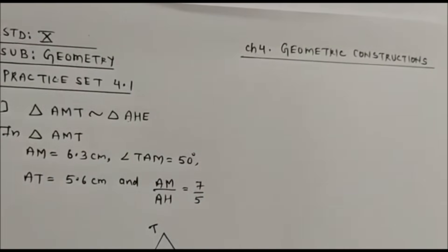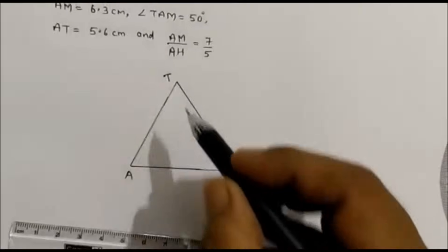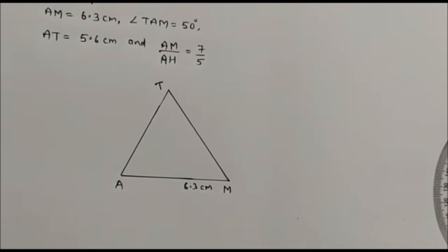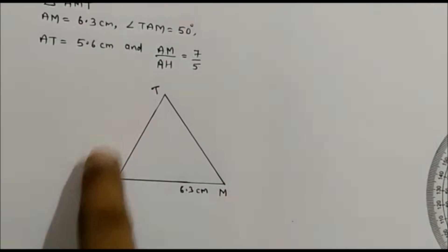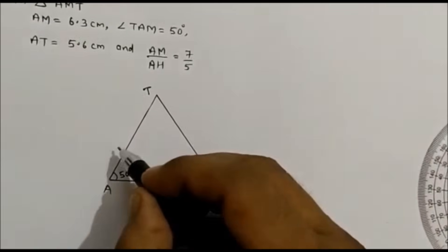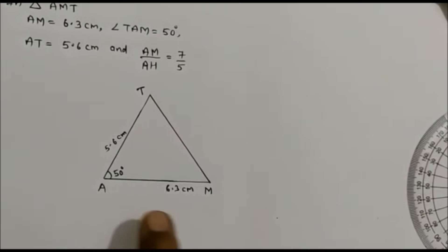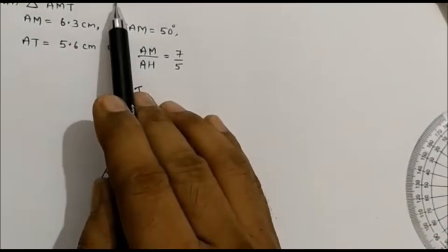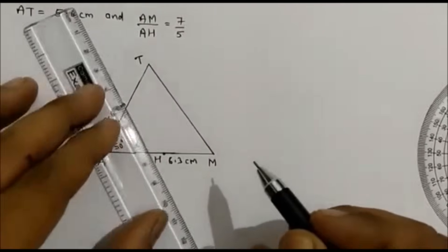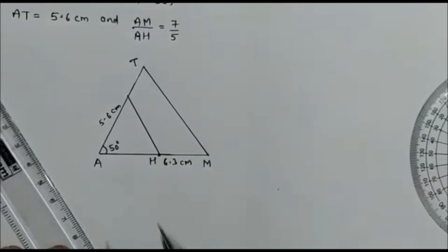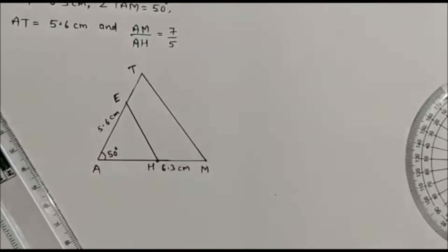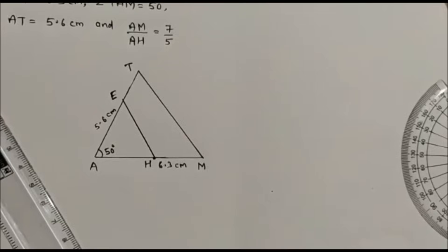We will draw the rough figure. First we draw triangle AMT — AM is 6.3 cm, angle TAM is 50 degrees, and AT is 5.6 cm. Another triangle is AHE; since AH ratio is 5, we mark point H and point E inside. Triangle AHE will be inside triangle AMT, so we construct the rough figure accordingly.